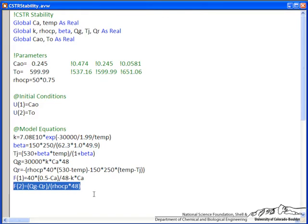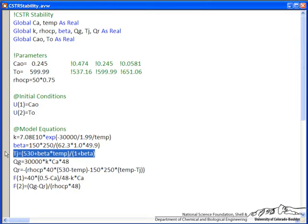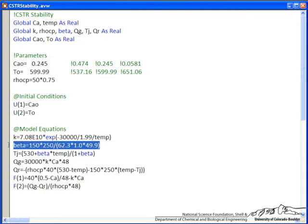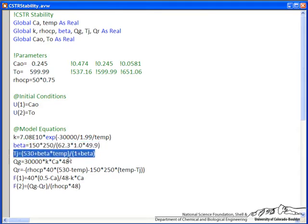And rho CP, of course, is density times heat capacity, and then 48 is the volume. And so the temperature of the coolant or heating, depending on the conditions, but the external temperature that provides heat transfer has a dependence on the reactor temperature. And this says if the reactor temperature is higher, then indeed the external temperature is higher, and there's just some parameter that we calculated that is used to get this temperature. It's just an expression that's a reasonable relation between the coolant or the heat transfer temperature.